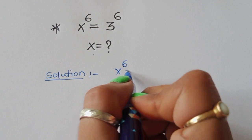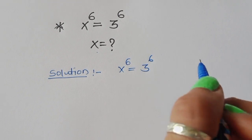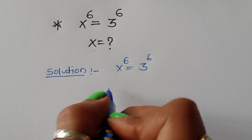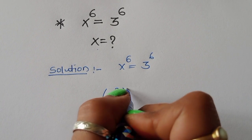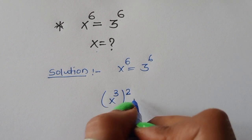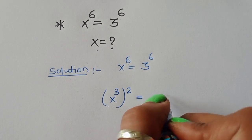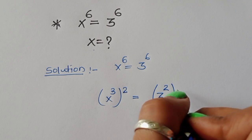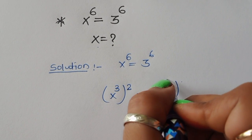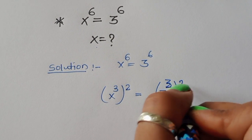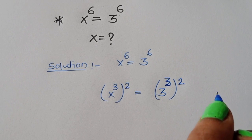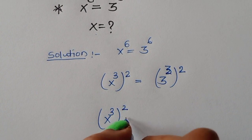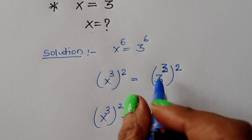x⁶ = 3⁶. We can convert this as (x³)² = (3³)², so we rewrite it as (x³)² - (3³)² = 0.